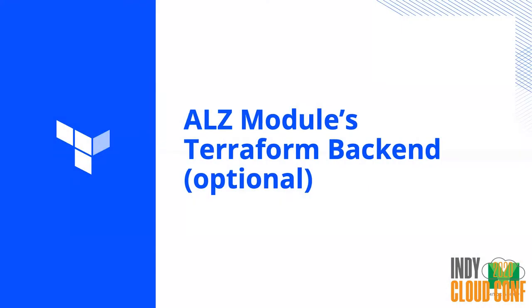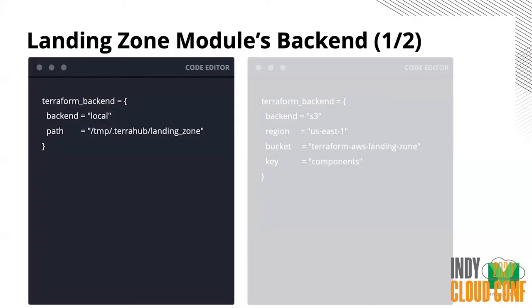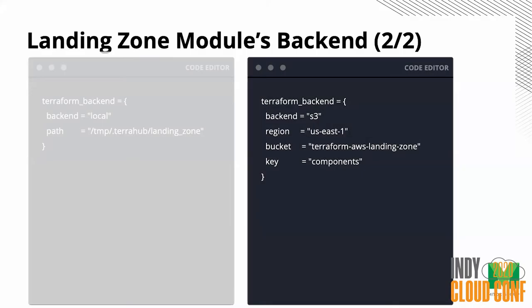This is optional: by default we have defined the backend local to go to a particular path. But if you want to customize that and store all of your Terraform state in an S3 bucket, this is how you would change it to have your old TF state files put into a particular S3 bucket. In this case the bucket name is terraform-baseline-zone.